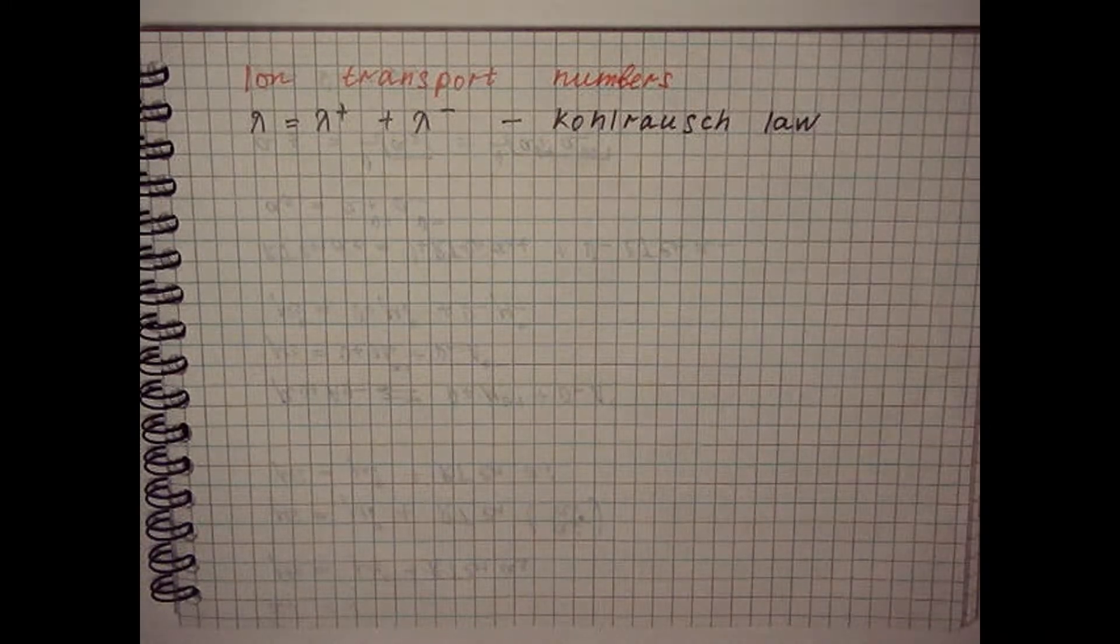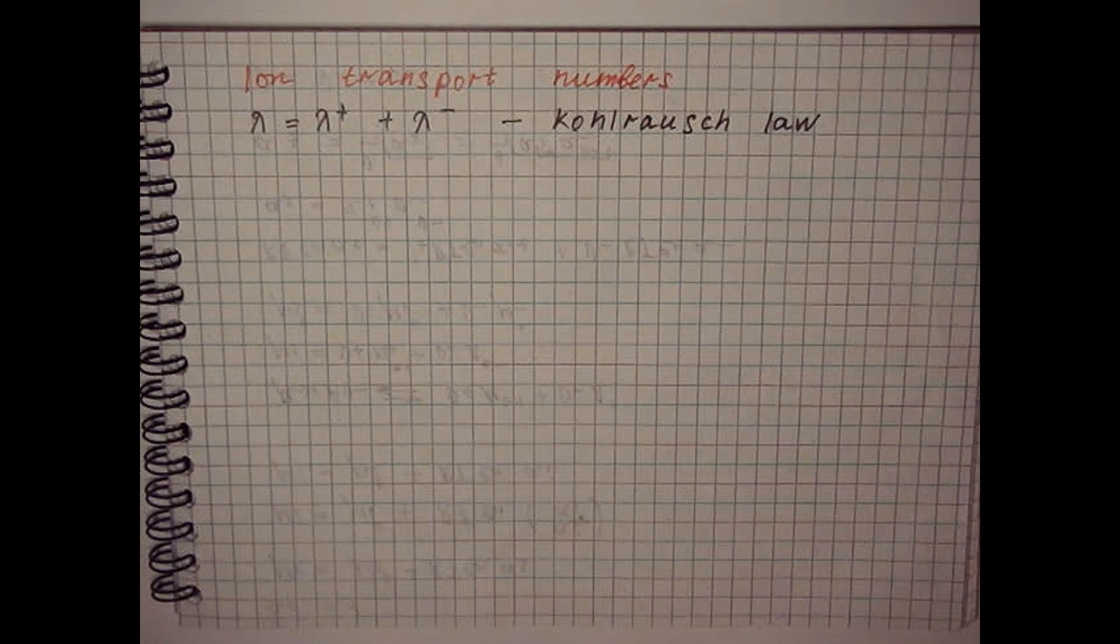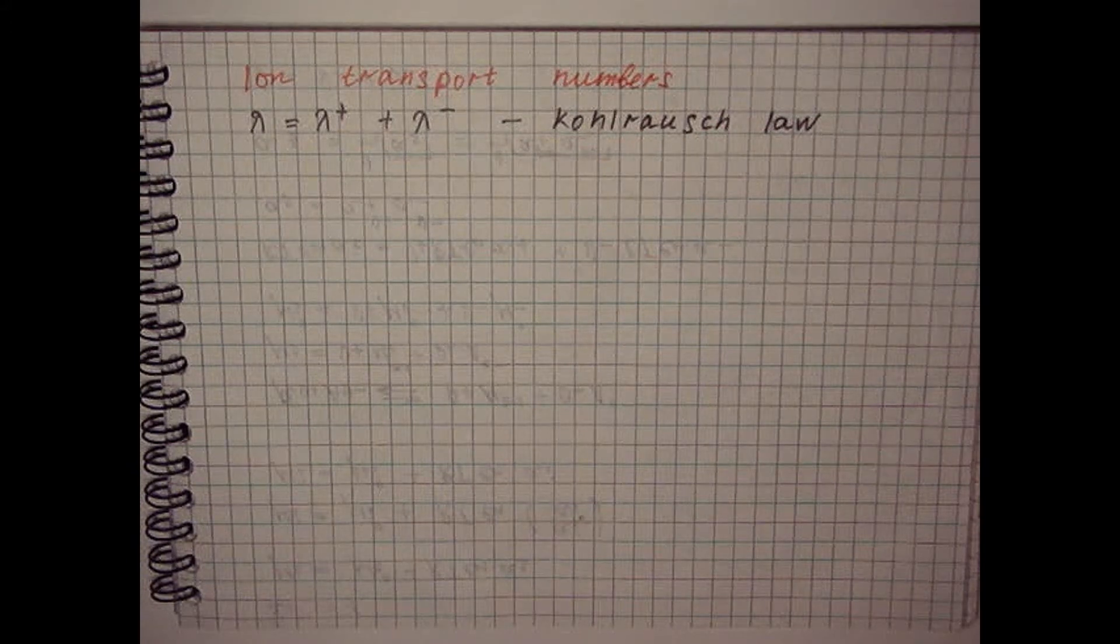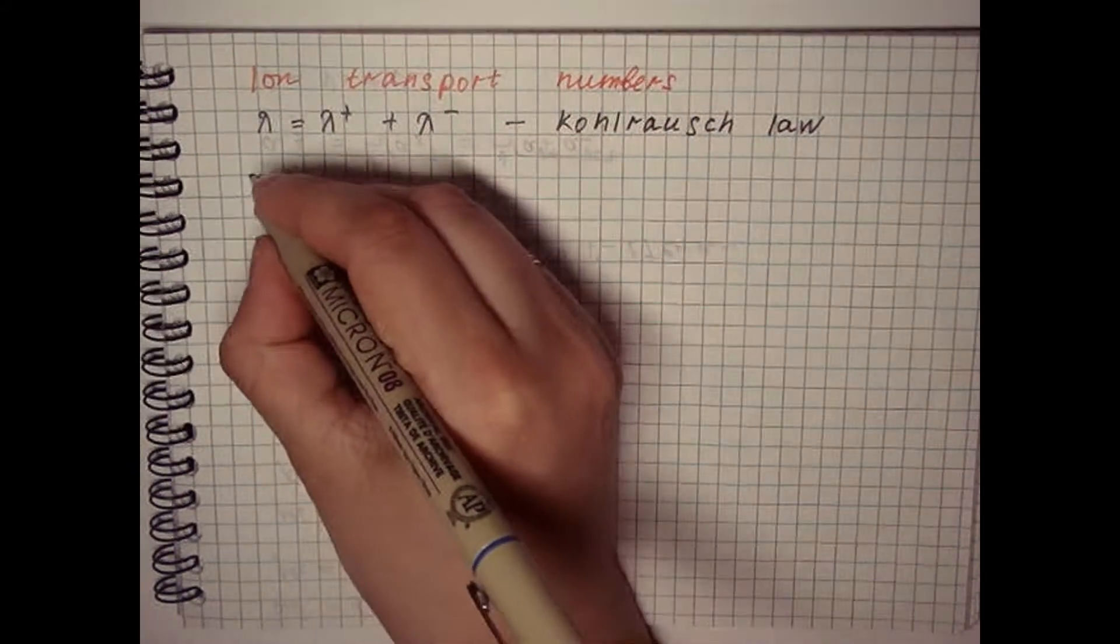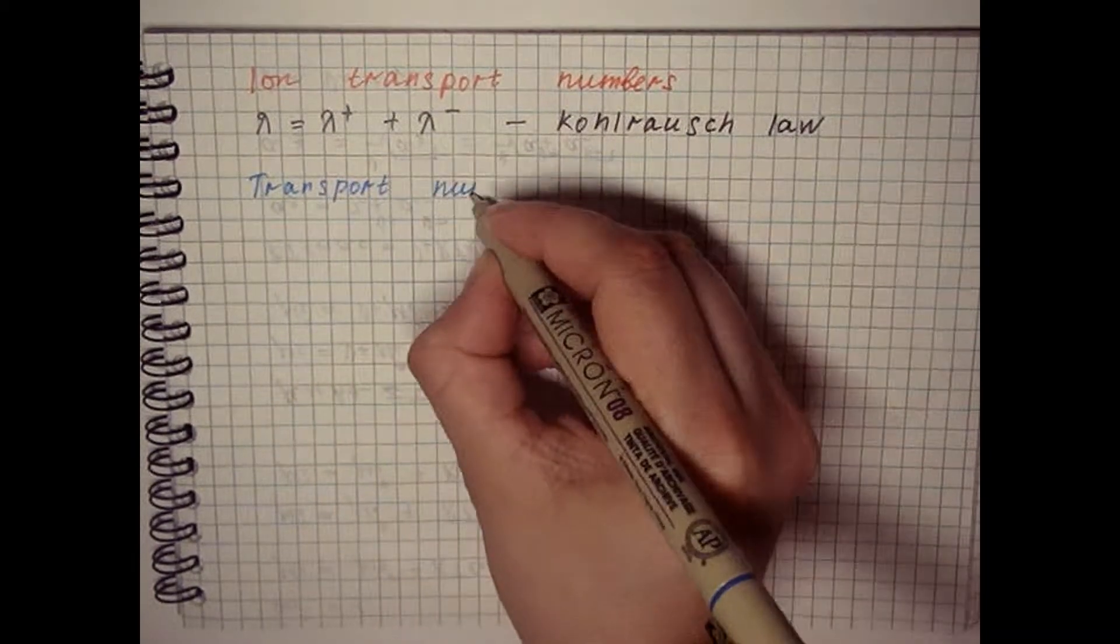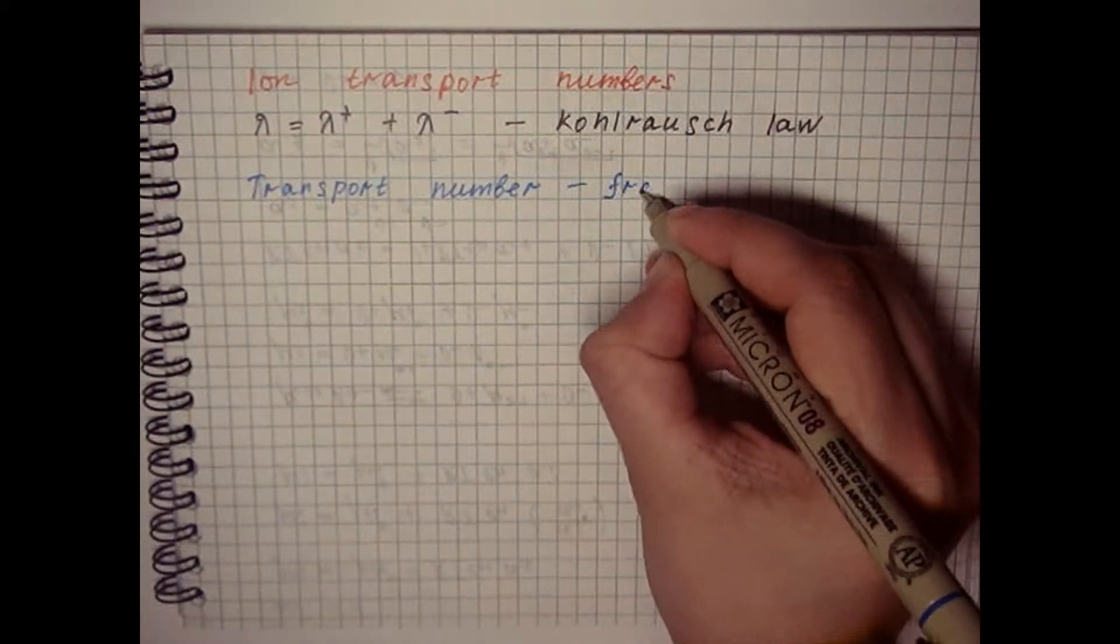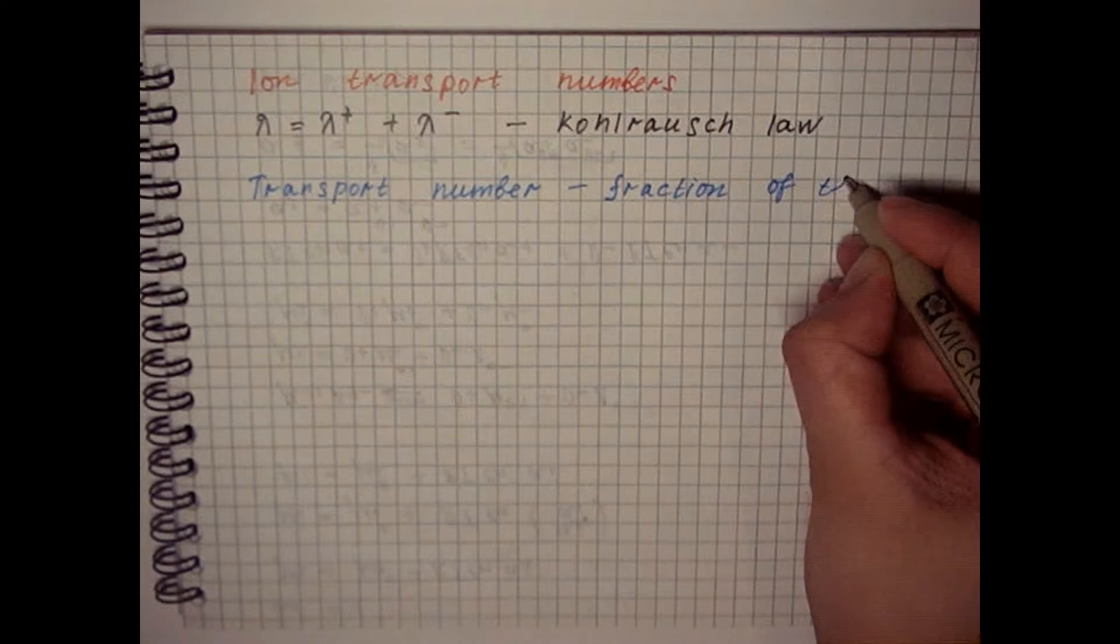To find the electrical conductivity of an individual ion, it is necessary to know the fraction of current carried by cations and anions. The fraction of current carried by ions of a given type is called the electric transport number of this ion.